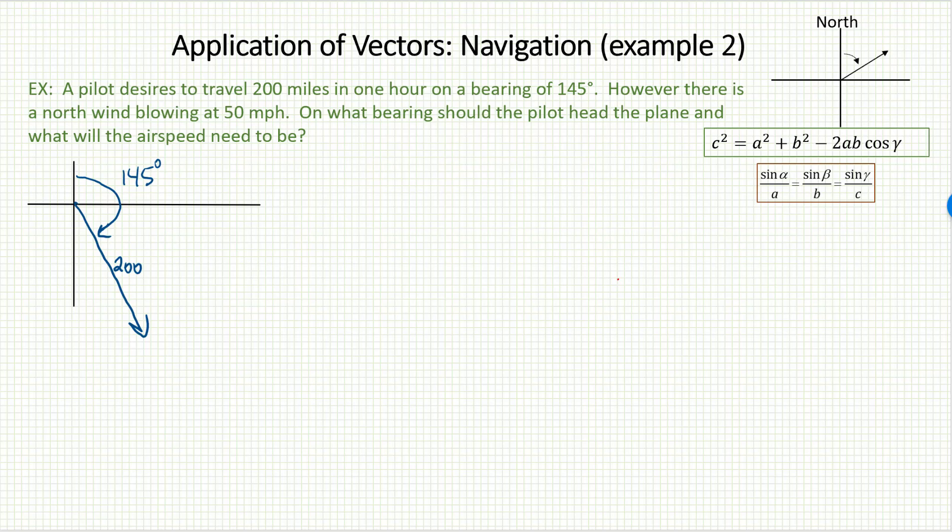The pilot can't actually just aim there directly because there's a north wind, a wind coming from the north, blowing south at 50 miles an hour. That wind is going to push on the plane, impacting both the speed and the direction.